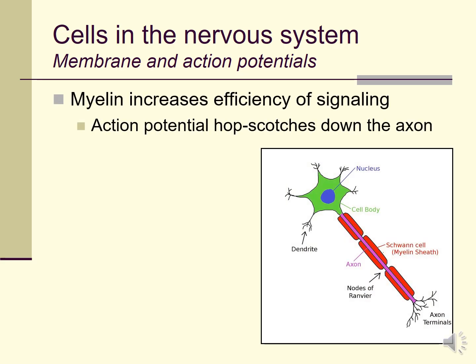Myelin is a fatty lipid layer that wraps around axons and acts as insulation, allowing the action potential to hopscotch between the little gaps in the pieces of myelin rather than travel like a continuous wave. The myelin pieces are called Schwann cells and those little gaps are called nodes of Ranvier. This makes the transmission of an action potential down the axon much more efficient.